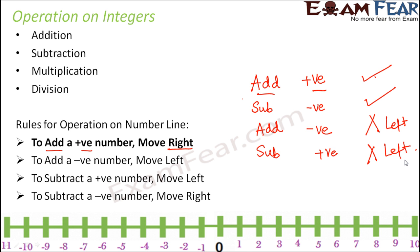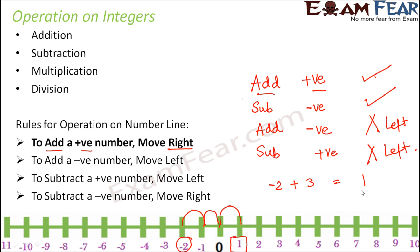Let me give a simple example to illustrate how these rules apply. Let's say the given integer is minus 2, and you want to add positive 3 to it. Since you are adding a positive number, you move towards the right. From minus 2, move 3 steps to the right: 1, 2, 3 — you have reached 1. So minus 2 plus 3 equals 1.